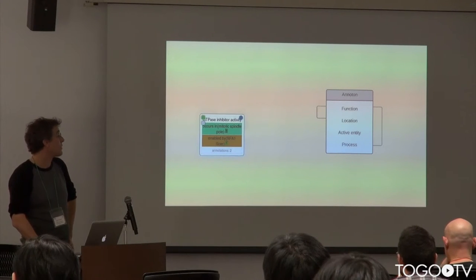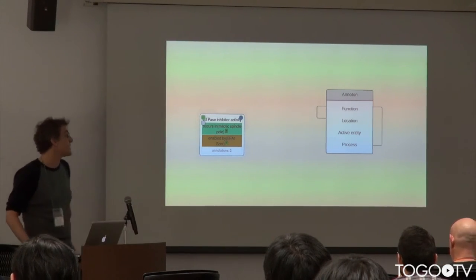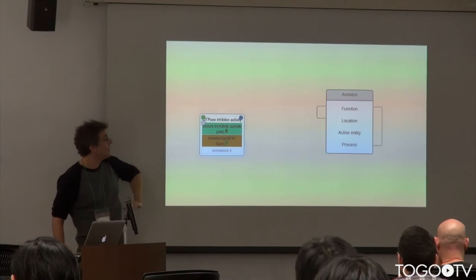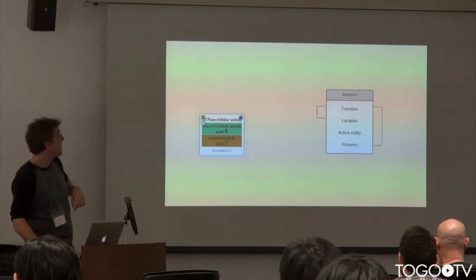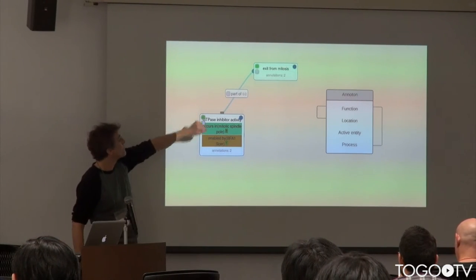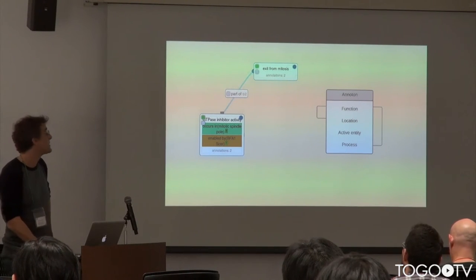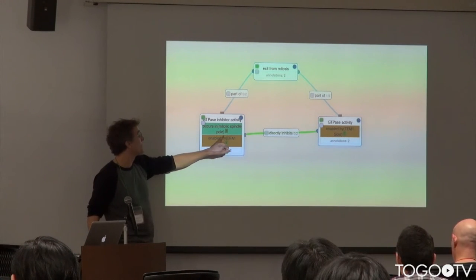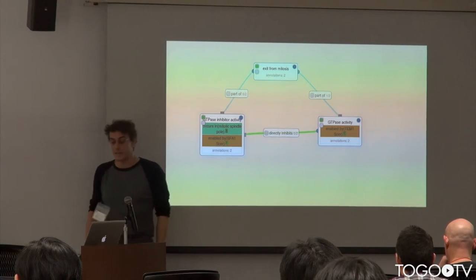So within Noctua, this would look like, in this case, we have the function is GTPase inhibitor activity. The location, it occurs in mitotic spindle pole. It's enabled by BFA1. So we have a gene there. And then we're going to add on, this is part of the exit from mitosis process. So we're able to chain these larger concepts together and start making nice little graphs of what's going on. So we can see that this anatom is directly inhibiting GTPase activity.